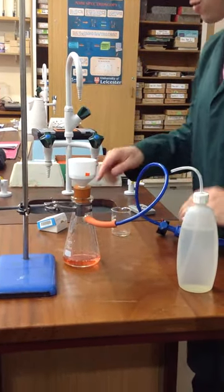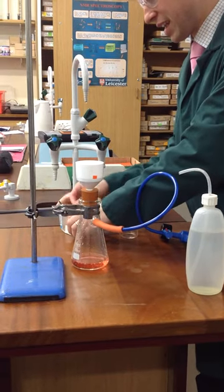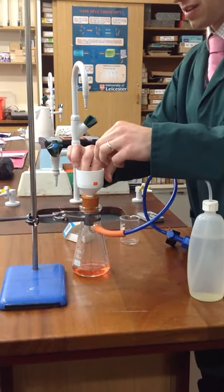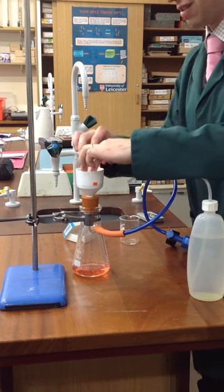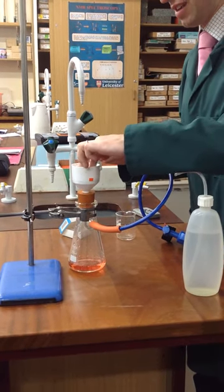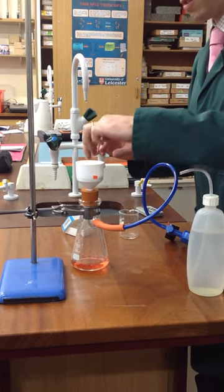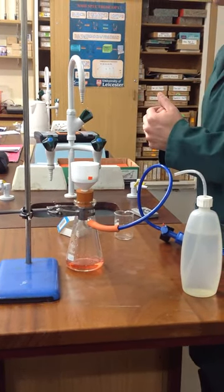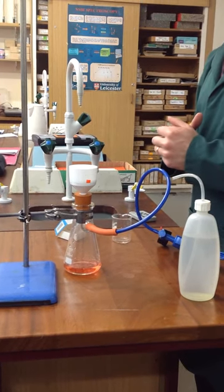And then what you're going to have to do is dry that solid. So what I find a nice technique is just to get a second filter paper, to pop that on top, and just press down lightly on your solid that you produce, and then you're ready to transfer this and you can just dry it probably in an oven overnight. Okay, so that's how you filter under reduced pressure.